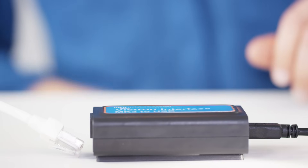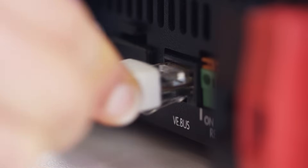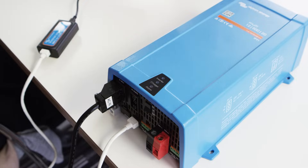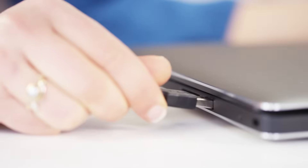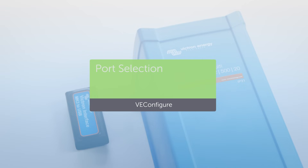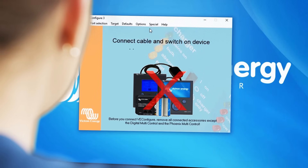First, we will connect our device to the computer. You will need an RJ45 UTP cable and an MK3 or MK2 USB. Make sure the Victron device is on. Insert the USB in your computer. In VE Configure, go to Port Selection, COM Port and select Auto Detect. You will now see Target found.